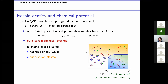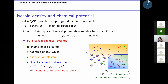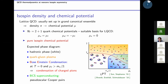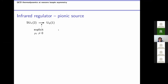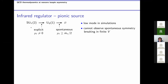QCD at pure isospin chemical potential is also interesting in its own right. We have the standard hadronic phase, the quark-gluon plasma phase, and if we increase the isospin chemical potential, we go into a phase of condensed charged pions — the Bose-Einstein condensation phase. If we further increase the isospin chemical potential, it is likely that we will pass into a BCS superconducting phase, where instead of tightly bound pions we will have rather expanded pseudoscalar quark-antiquark pairs. The Bose-Einstein condensation is accompanied by the spontaneous breaking of a remnant of chiral symmetry at finite isospin chemical potential, and this is what we would like to observe on the lattice.